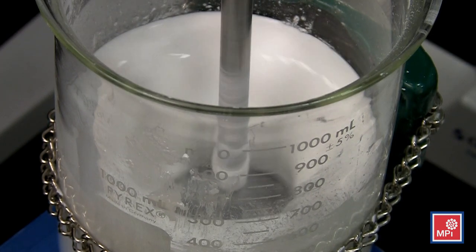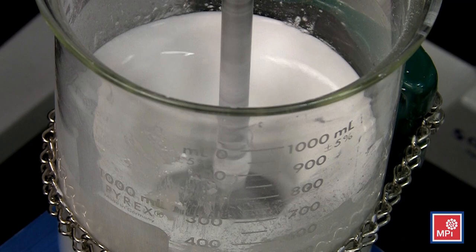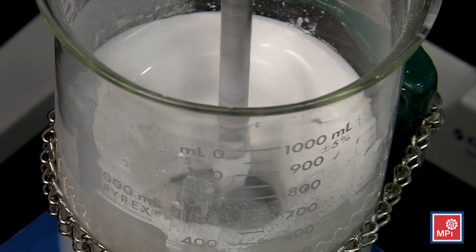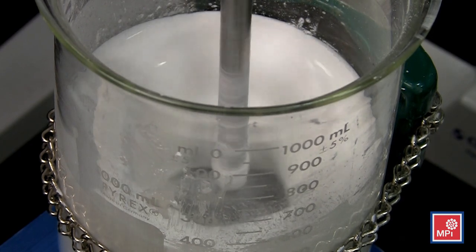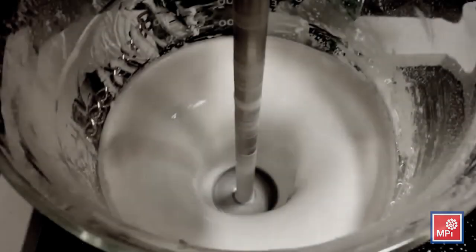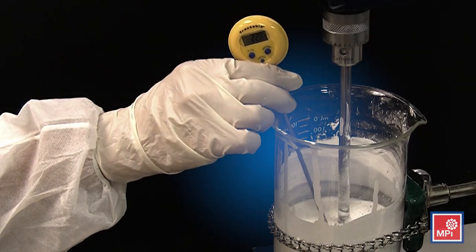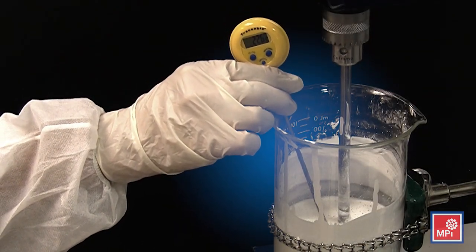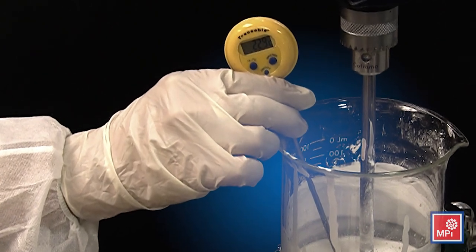While the mixture may appear viscous and dull initially, the wax agglomerates will be sheared and dispersed into their primary particles. In time, you will notice a growing vortex, lower viscosity, and a higher gloss appearance. Since we want to ensure that the wax doesn't dissolve in the mixture, it would be helpful to monitor the dispersion temperature periodically, as it should not exceed 40 degrees Celsius.